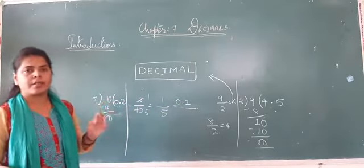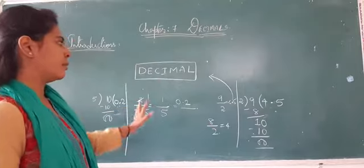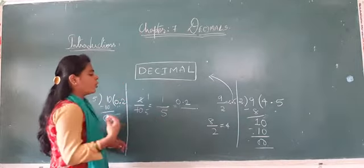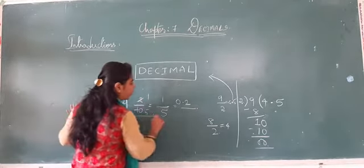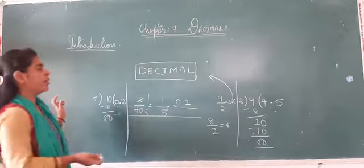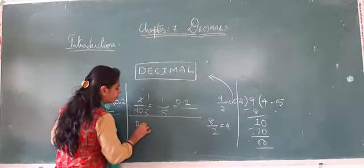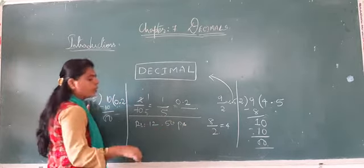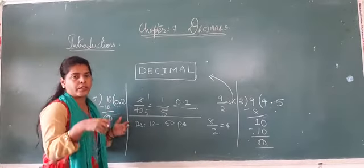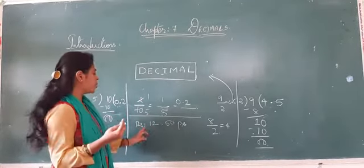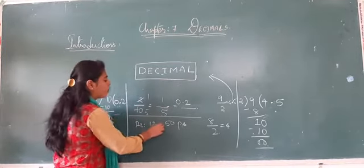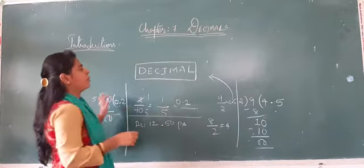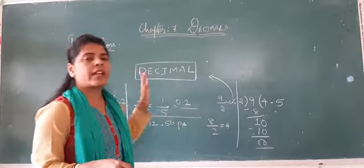This point is called the decimal. Now we see decimals in real life. For example, if you go to a shop and the amount is rupees 12 and 55 paise, when you write it, you use a decimal: 12.55. The point is used as a single decimal point to separate rupees from paise. This is how we have seen decimals in real examples.